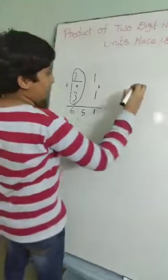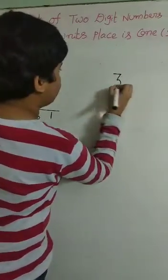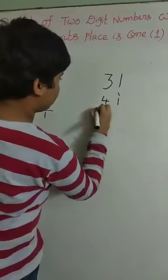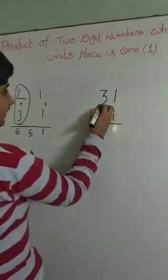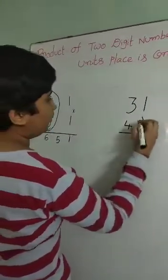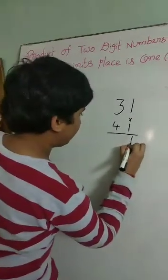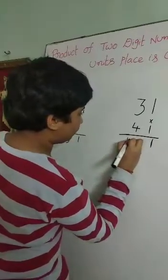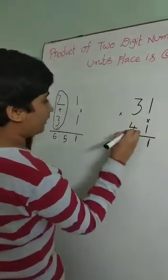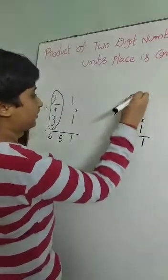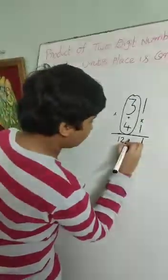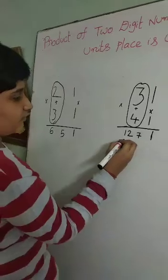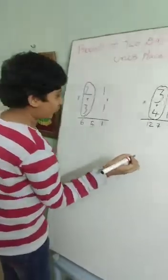Now let us have one more example: 31 into 41. In the unit place there is 1, and in the 10s place there is 3 and 4. We multiply the unit place: 1 into 1 is 1. Now we multiply the 10s place: 3 into 4 is equal to 12. We add the 10s place digits: 4 plus 3 is 7. The answer of 31 into 41 is 1271.